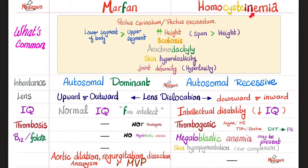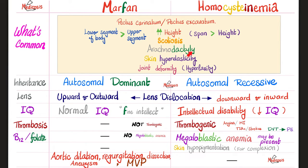Now to the comparison — Marfan versus homocystinemia. What is common between the two? Both have chest deformities such as pectus carinatum (bulging outwards) or pectus excavatum (caved inwards). Both patients are very tall, with arm span greater than height and lower body segment taller than upper. Both can have scoliosis, spider-like fingers and toes, hyperelastic skin, and joint hyperlaxity or hypermobility.